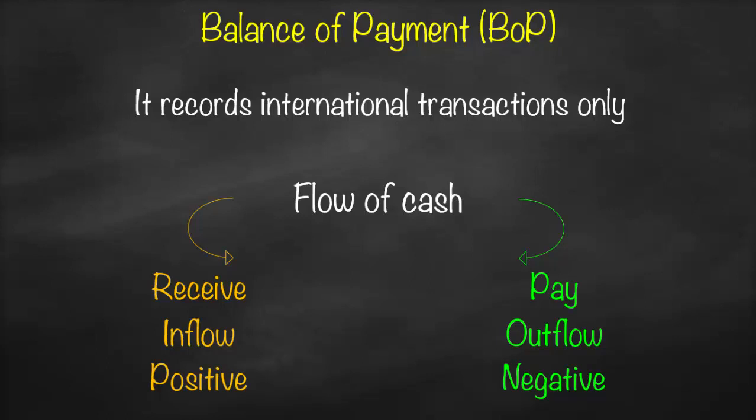For example, if we import BMW from Germany for 500 million dollars, we pay cash, so under Australia's current account we record a cash outflow — negative 500 million. If we export markers to Hong Kong for 100 million dollars, we receive the money, so we record it in our balance of payment as a positive value.